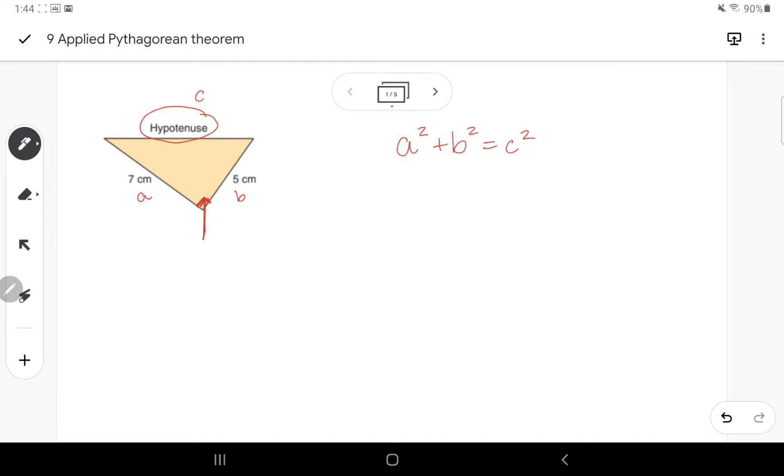Then I'll use these numbers that I have. So A is 7. 7 squared plus 5 squared equals C squared. Remember that 7 squared is 7 times 7. So 49 and 5 squared is 5 times 5, which is 25, equals C squared.